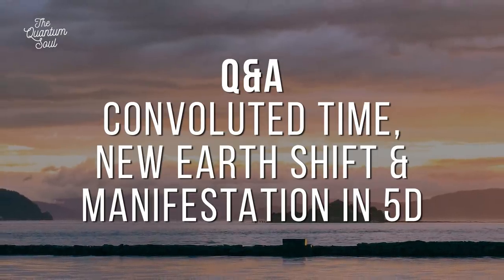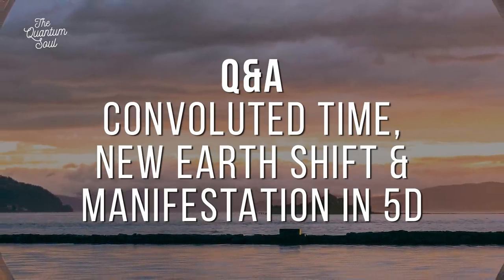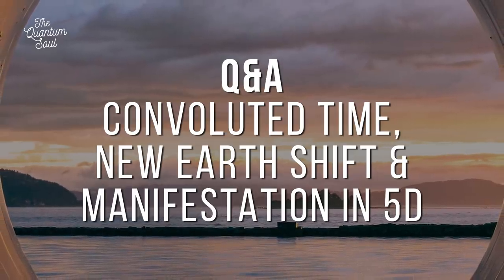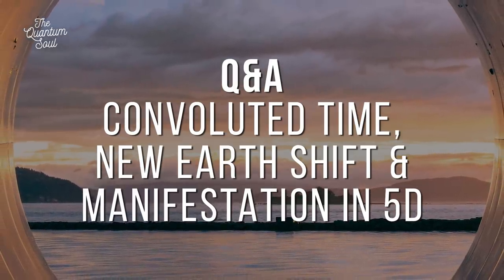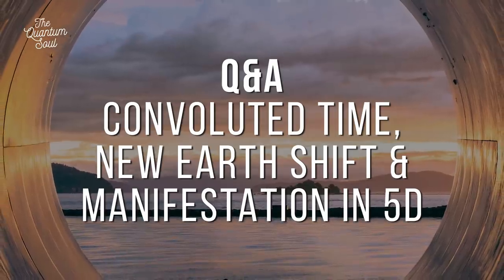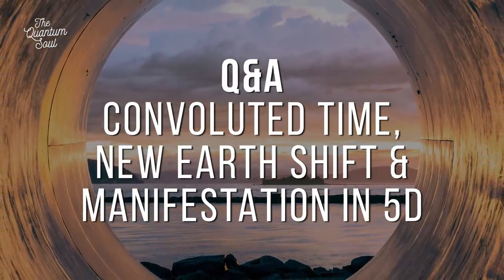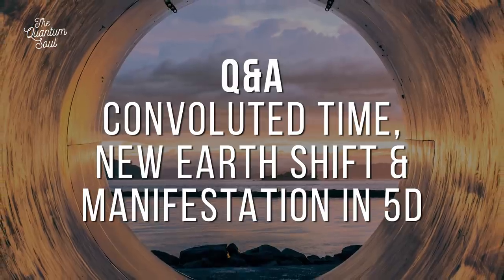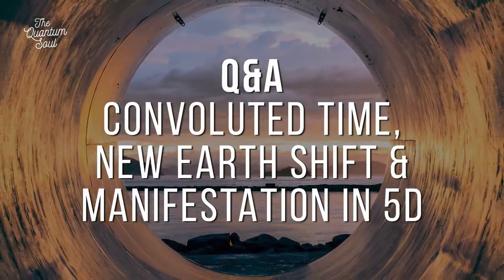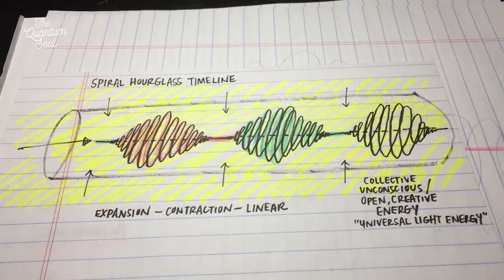Hello everyone, welcome. Thank you so much for watching this video. In oneness, we are Jess and Abe. This video is going to be sort of a connection to the last video, part two and part one of convoluted time. This video is just going to go through some questions and answers to dive deeper into the spiral timeline and convoluted time, including questions from the Facebook group such as how free will shifts as well as manifestation shifts when we open up into the spiral timeline, into that 5D New Earth timeline. I want to first start by referencing this spiral hourglass timeline that I talked about in my convoluted time part one and part two.